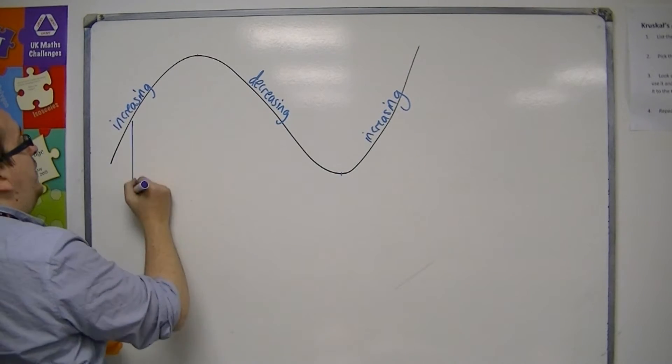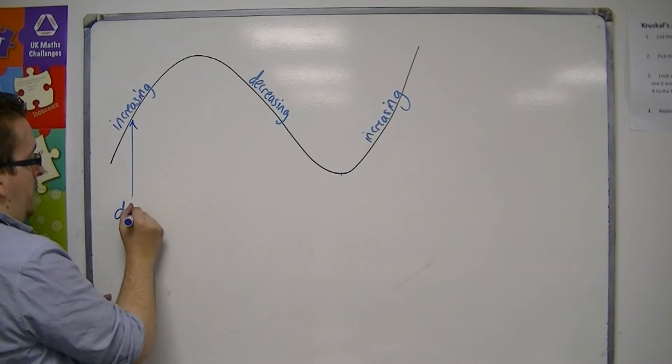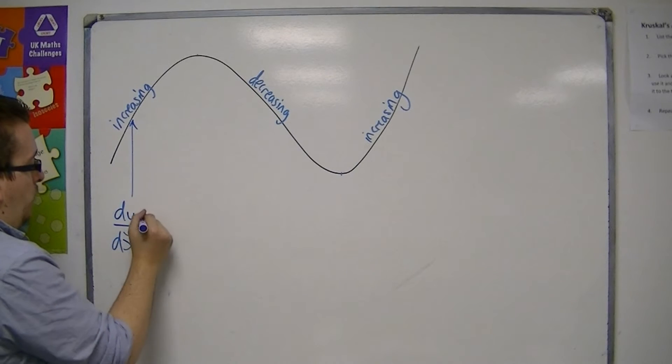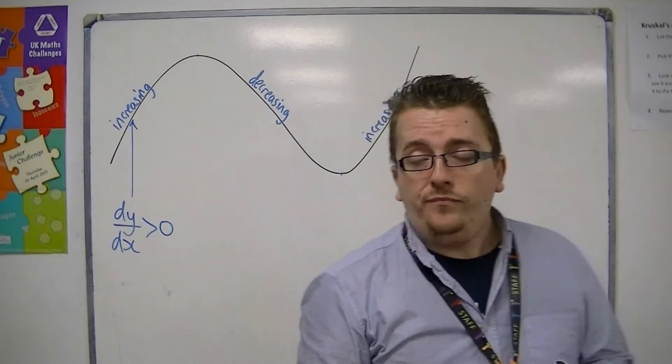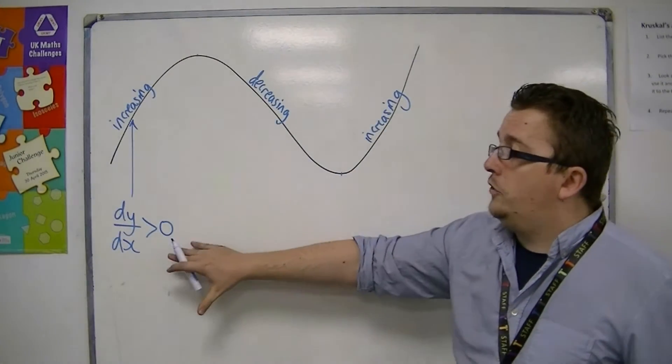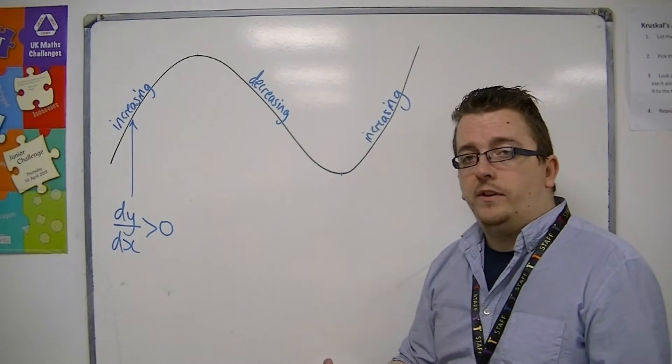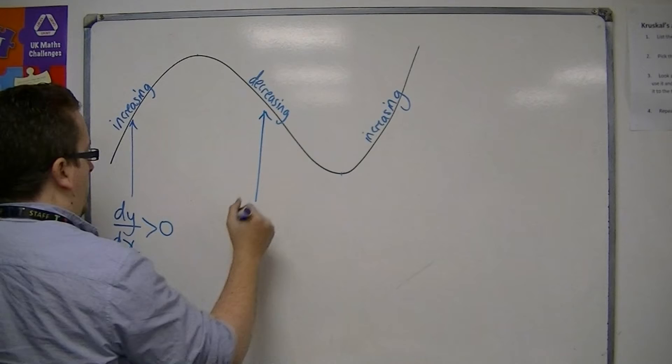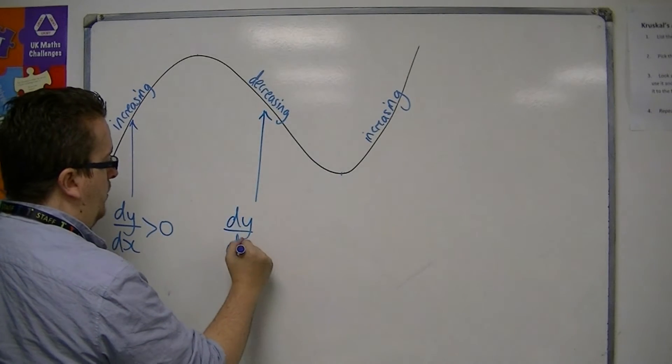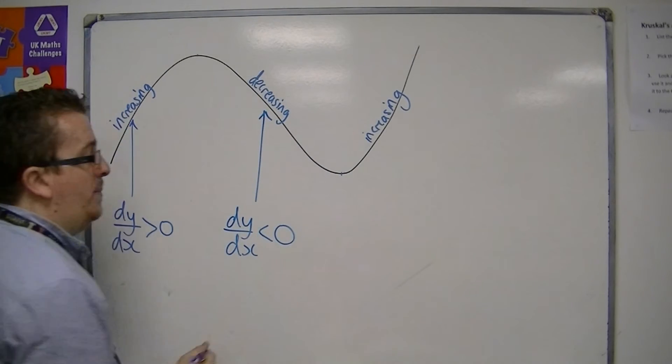So at the points that it is increasing, dy by dx will be larger than zero. It will be positive. And that will tell me, because it's got a positive gradient, the curve is increasing. When it is decreasing, dy by dx will be less than zero. It will be negative.